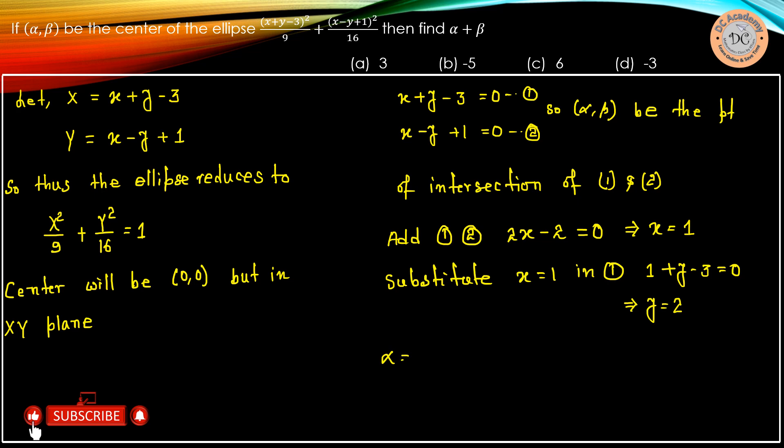Therefore, as alpha beta is the point of intersection, alpha must be 1 and beta must be 2. Therefore, alpha plus beta equals 3, and that's why option A is the correct answer for this particular problem.